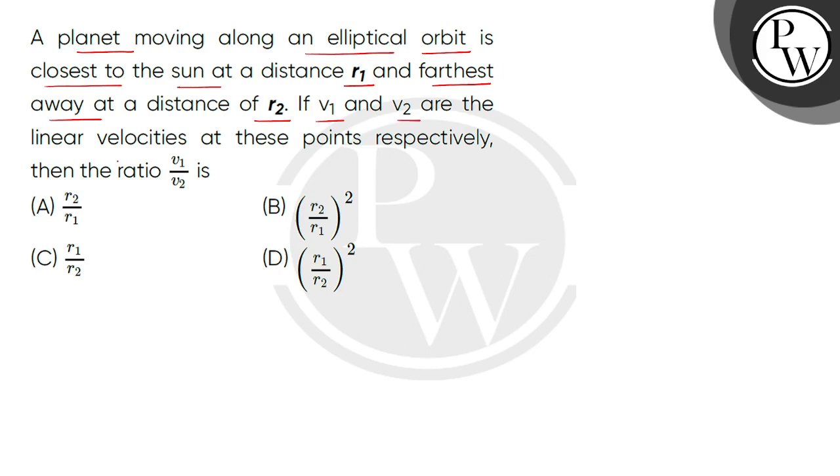If v1 and v2 are the linear velocities at these points respectively, then the ratio v1 to v2 is.